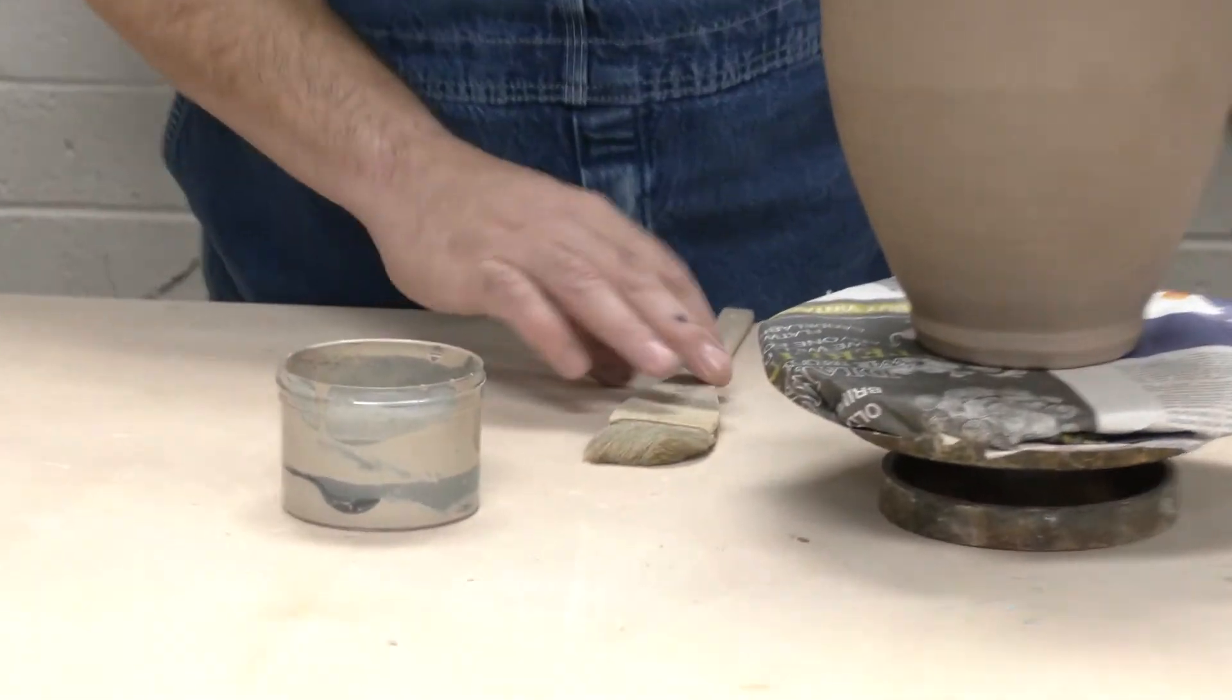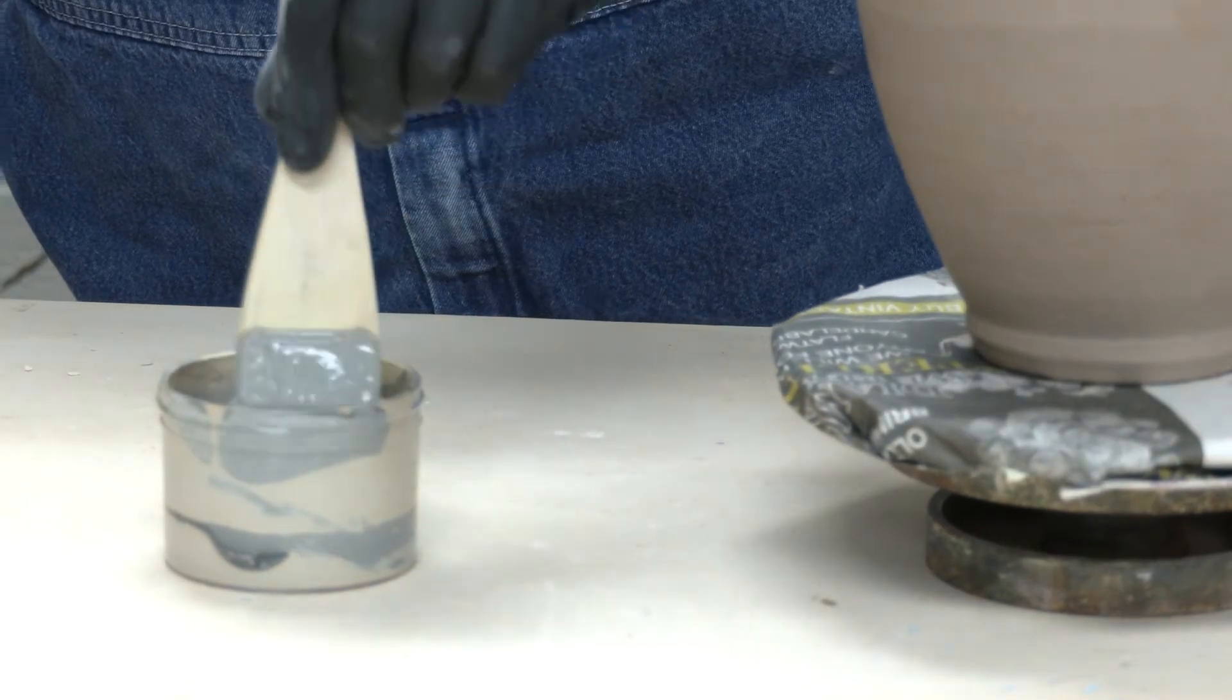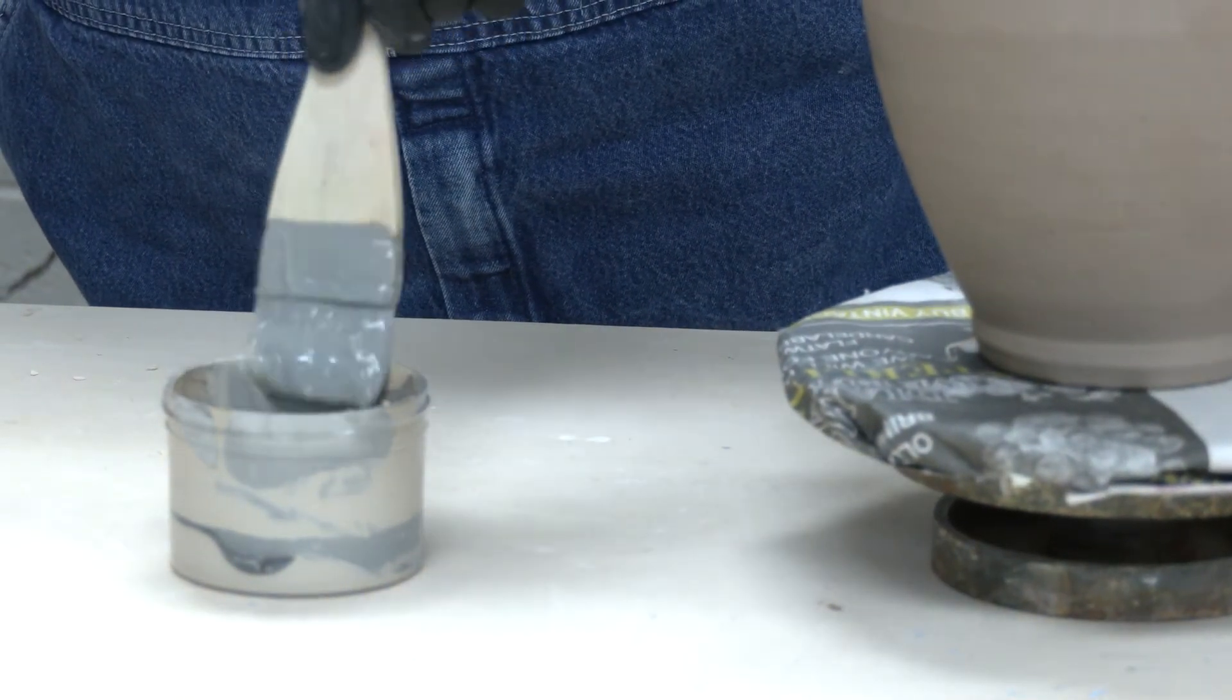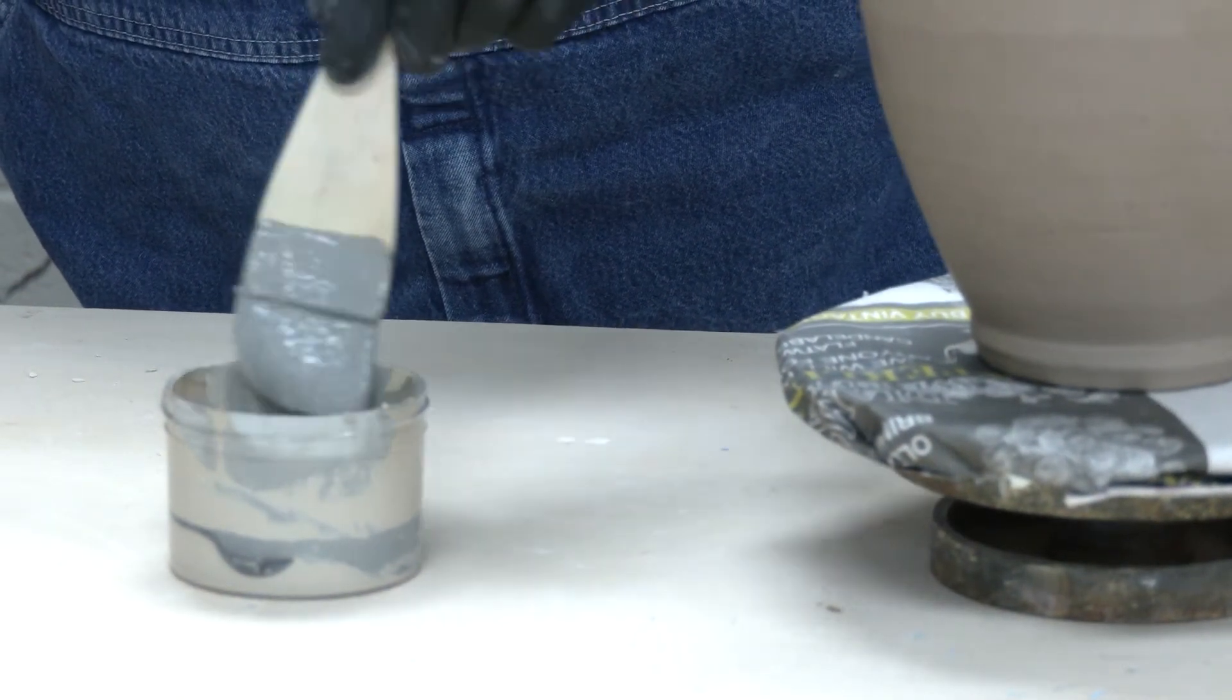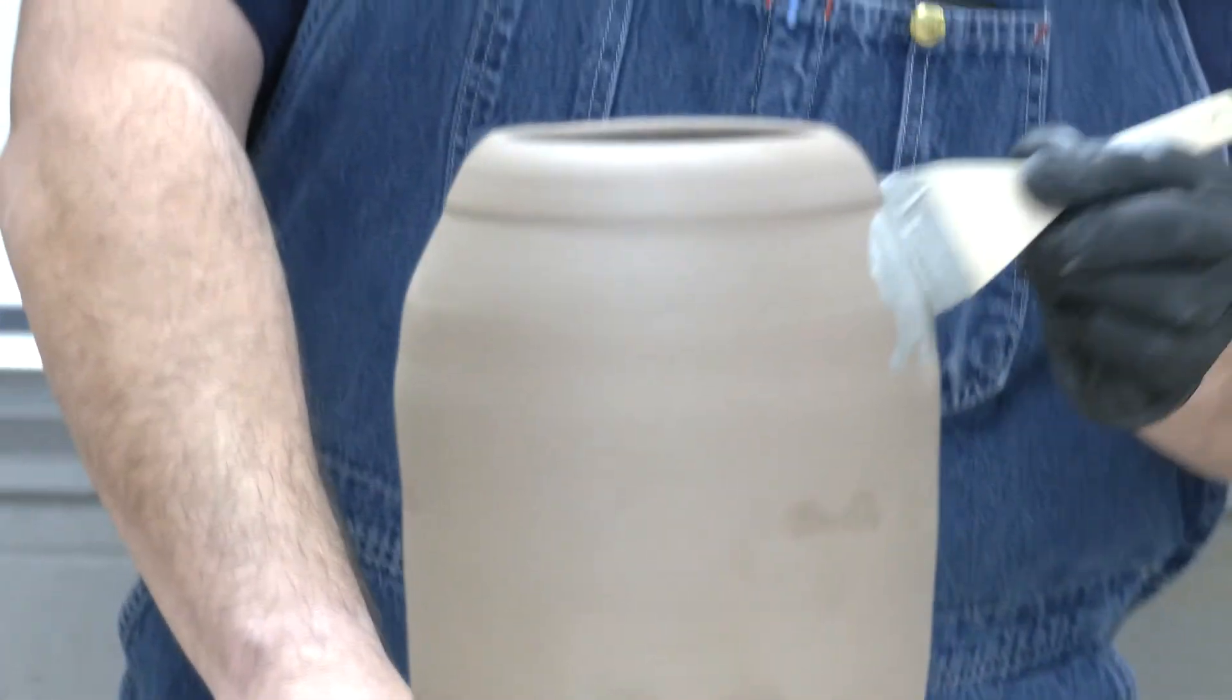This slip normally is a white slip but I've added the volcanic ash and the silicon carbide. Usually to one of these containers of slip I add a spoonful of each and then I just paint it on.